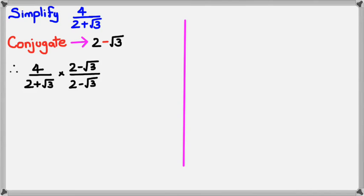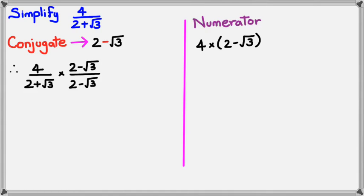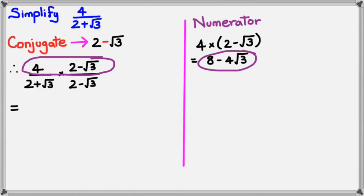I'm going to work out the numerator first. In the numerator I have 4 multiplied by 2 minus square root of 3, and this gives 8 minus 4 square root of 3. So that's the numerator done. Now I need to work out the denominator.